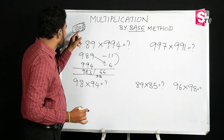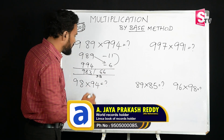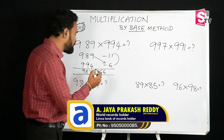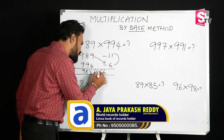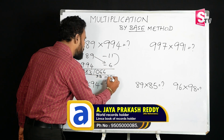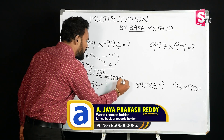Since the base is 1000 and we need 3 digits in the second part, 66 becomes 066. So the final answer is 983,066.